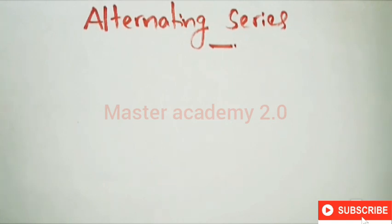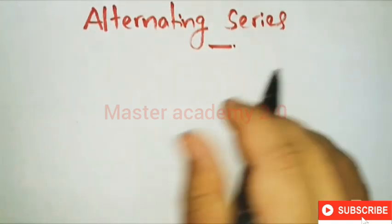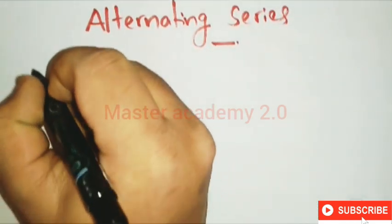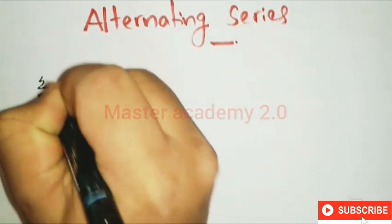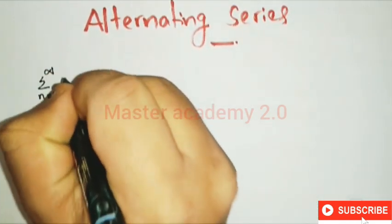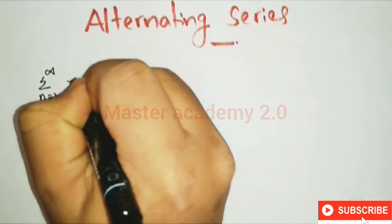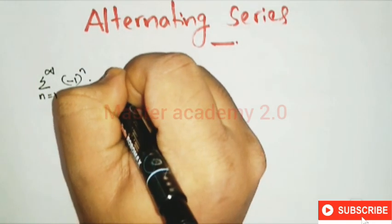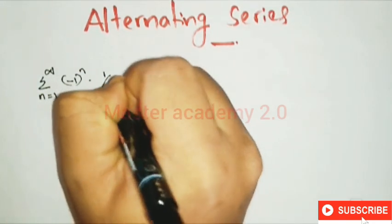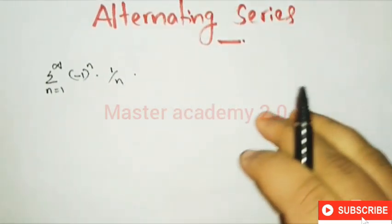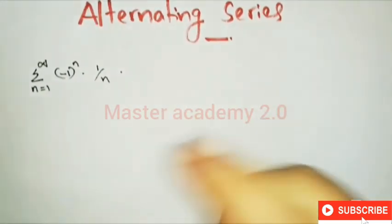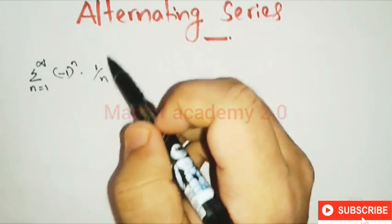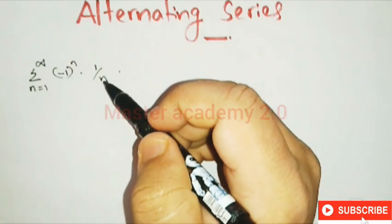Let's take an example. The given series is summation n equal to 1 to infinity of minus 1 raised to n, times 1 by n. This is summation n equal to 1 to infinity of minus 1 raised to n into 1 by n.